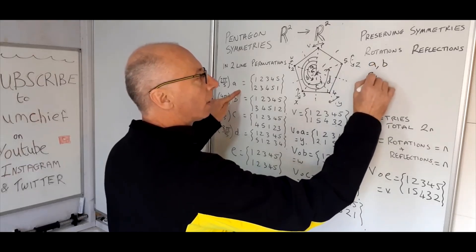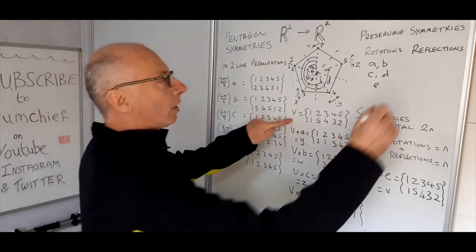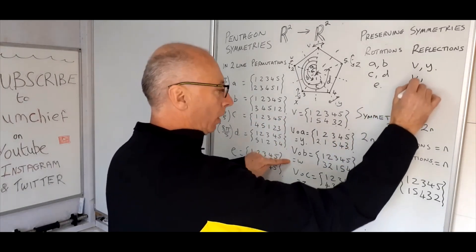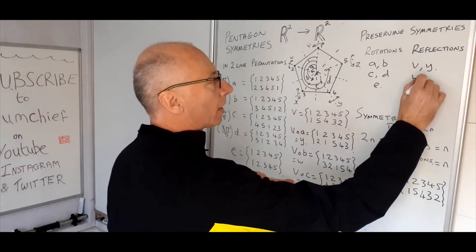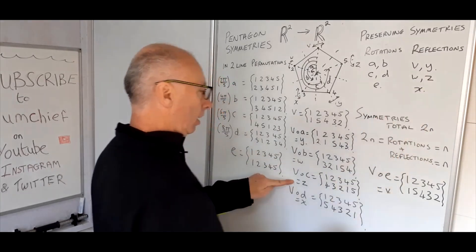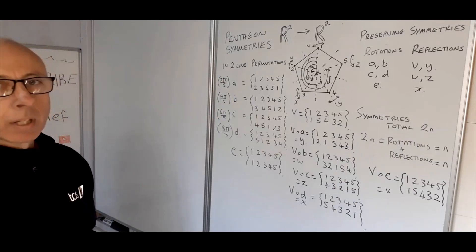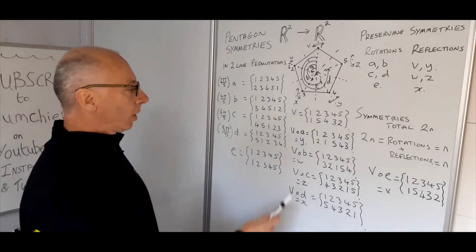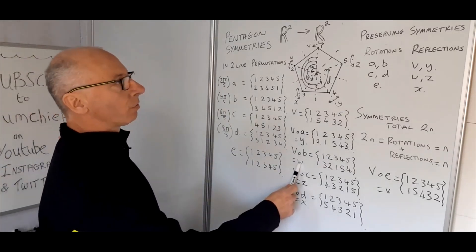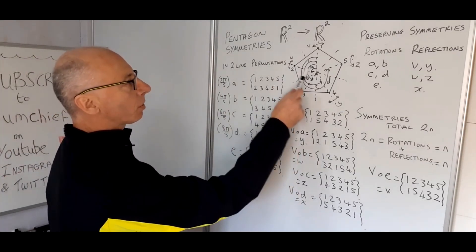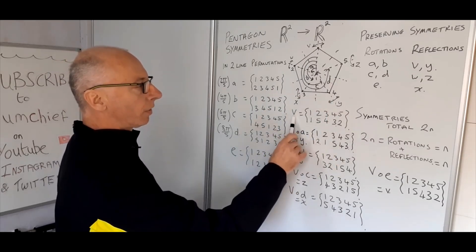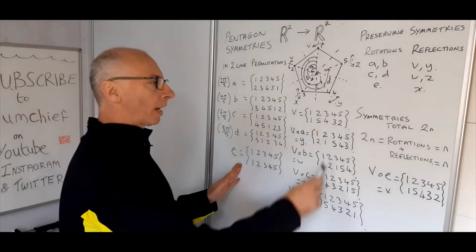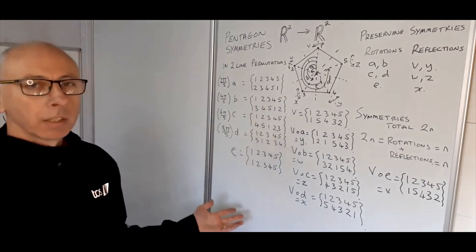Let's write them all up. Rotations: A, B, C, D, and E. Reflections: V, Y, W, Z, and X — that's our 5 reflections. That's how we can get all reflections by using just one reflection composed with all the rotations. You could equally have started with W and composed it with all rotations — you would still get the same output.